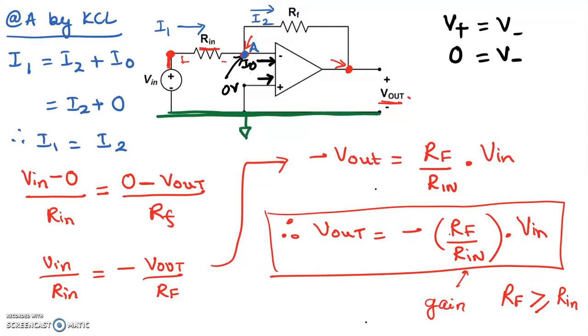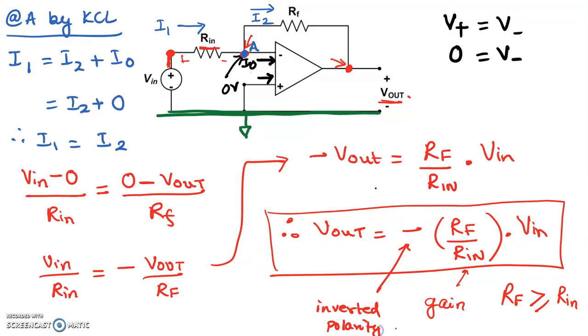Now the negative sign means that the output voltage would actually not be positive 10, but actually negative 10 volts. So in other words, the polarity of the output voltage is actually reversed in this particular case because of this. So this means inverted polarity. So this particular op-amp configuration is useful in not only amplifying the voltage, but also reversing the voltage polarity. So this kind of op-amp configuration is called the inverting amplifier.